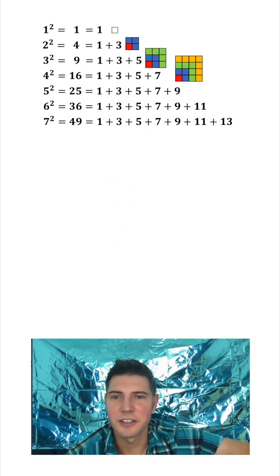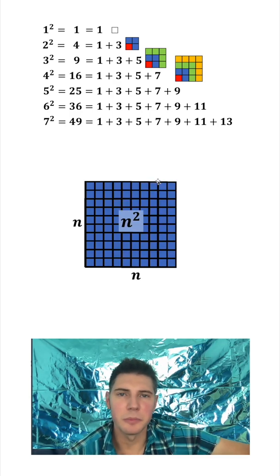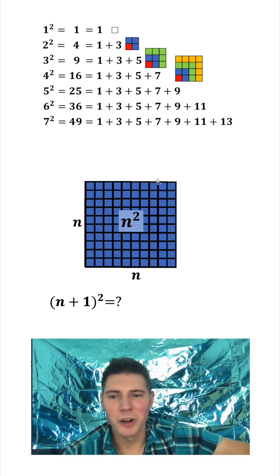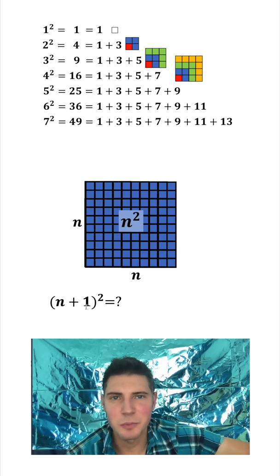But we can also show it in the general case. If we do this as n by n, the area would be n². Now what is the next one? (n + 1)² takes us to the next perfect square.